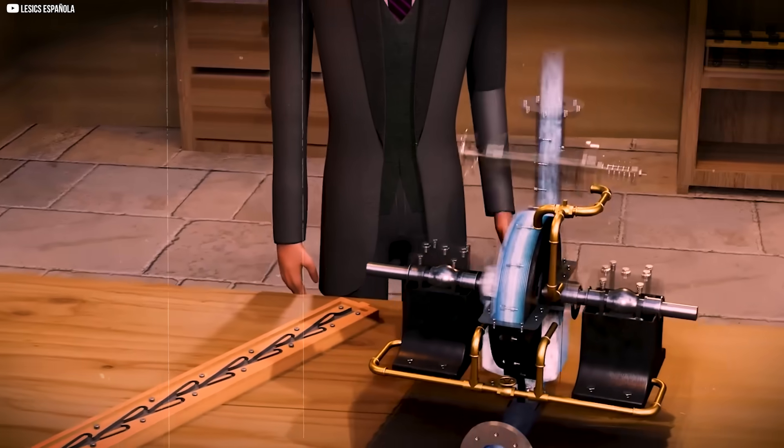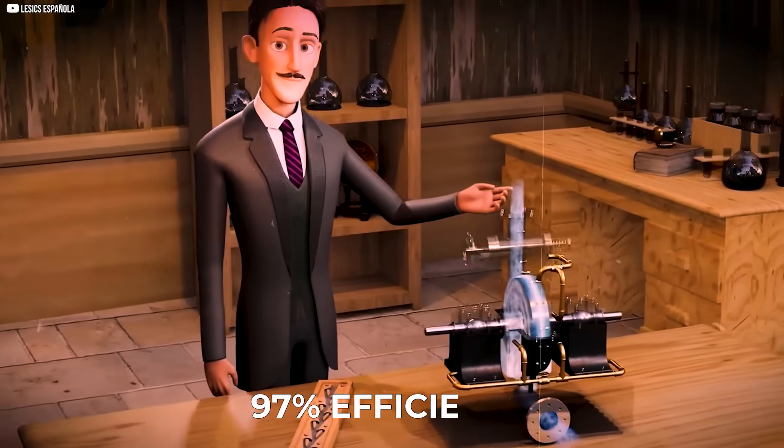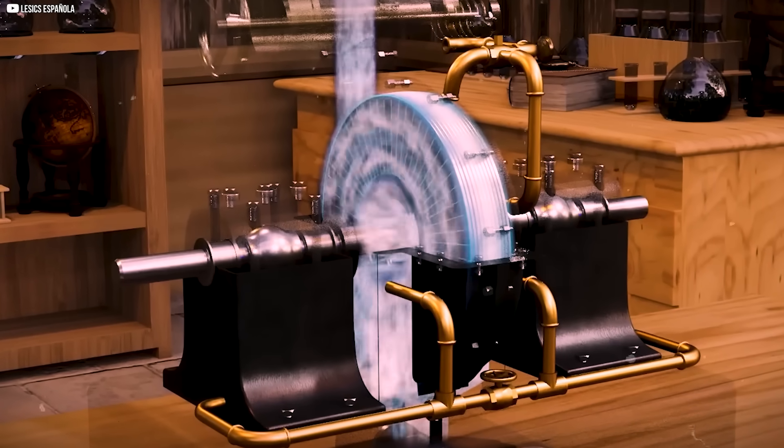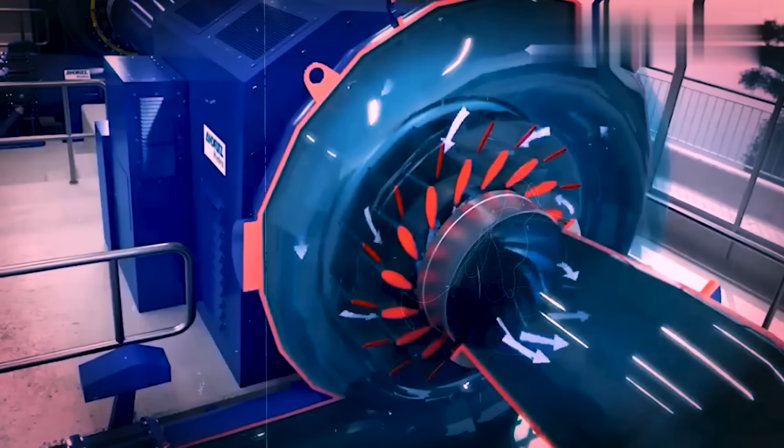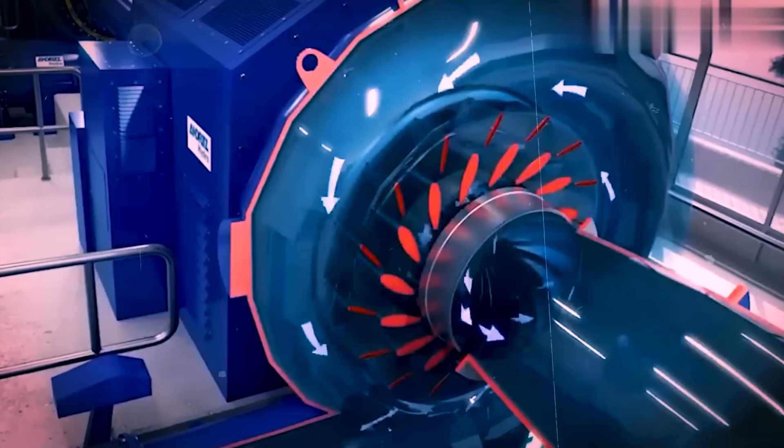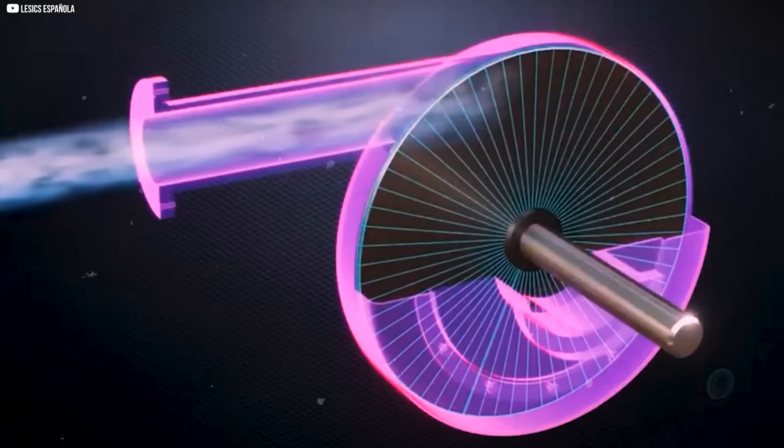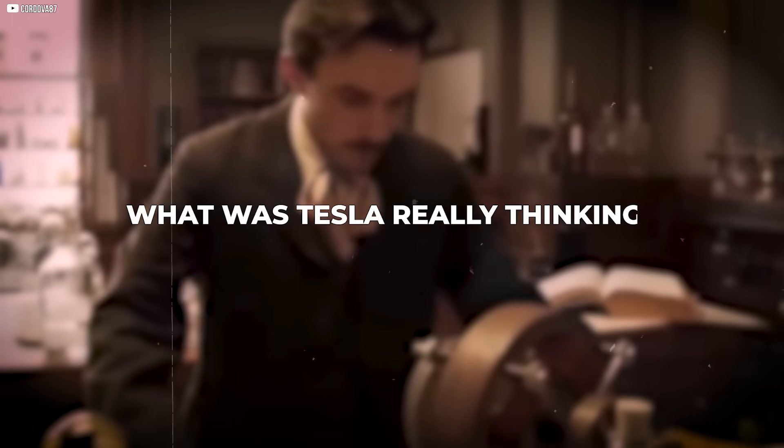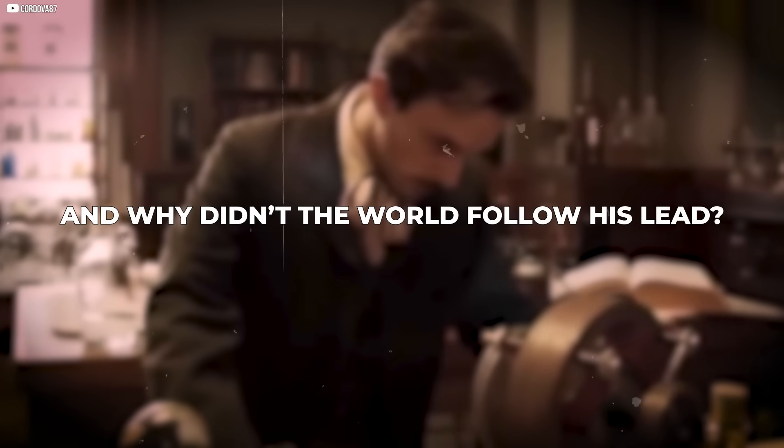He called it his favorite creation and claimed it could achieve 97% efficiency. It wasn't powered by pressure or lifted by airfoils. No, this was a machine moved by the hidden grip of water on metal, a force few engineers dared to trust. What was Tesla really thinking? And why didn't the world follow his lead?